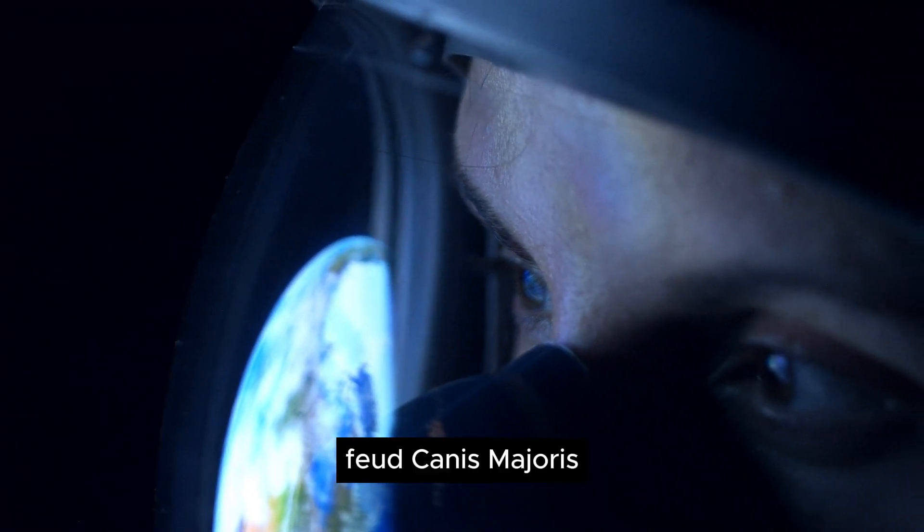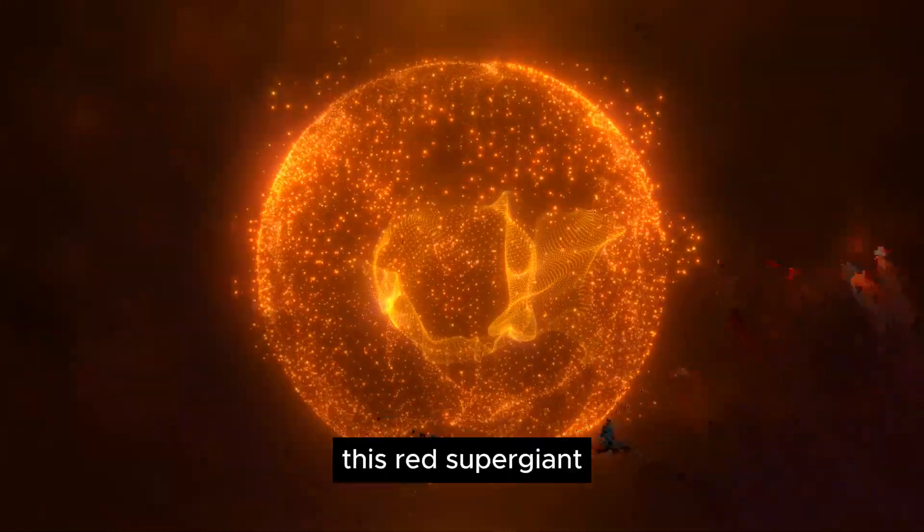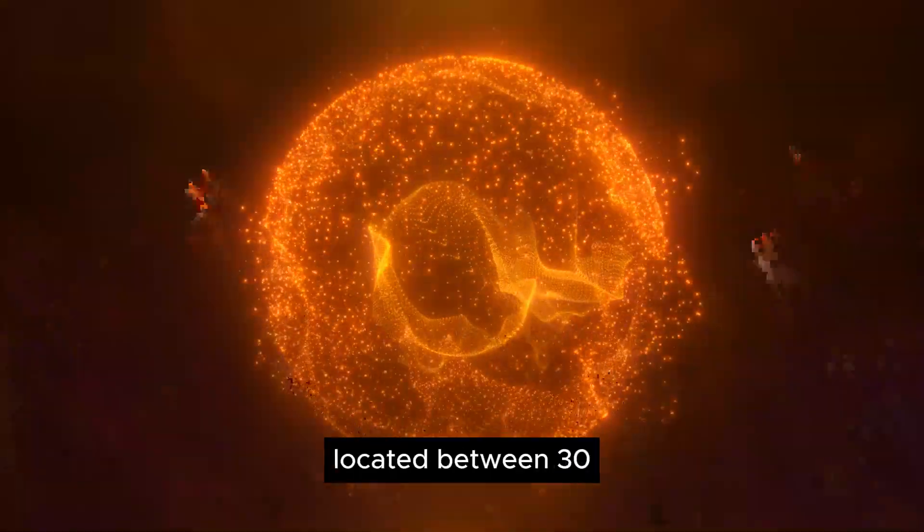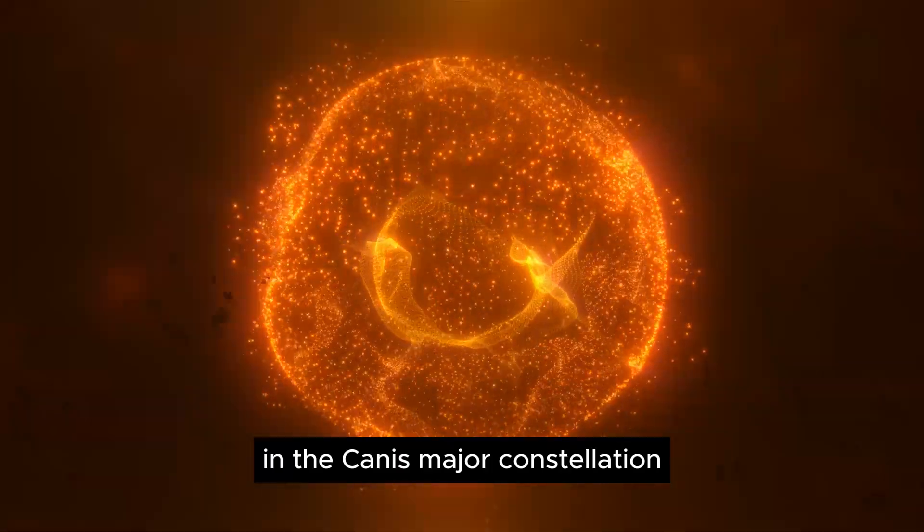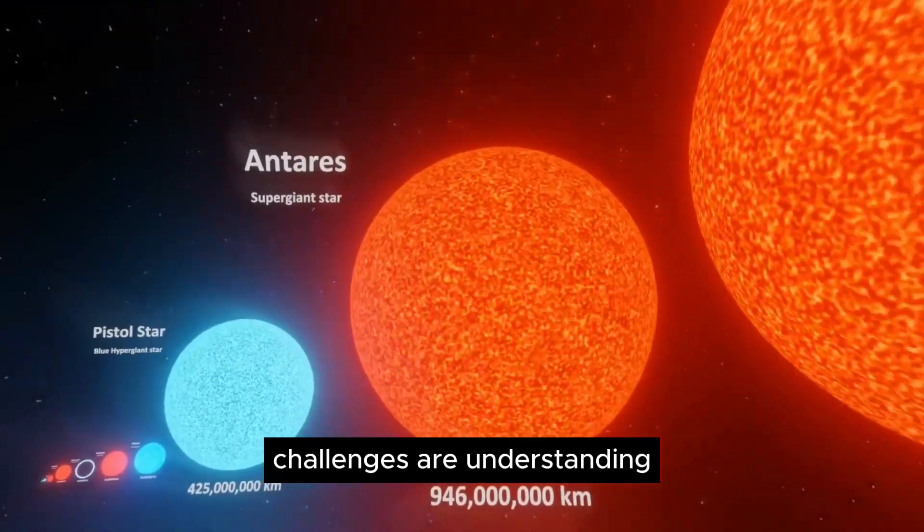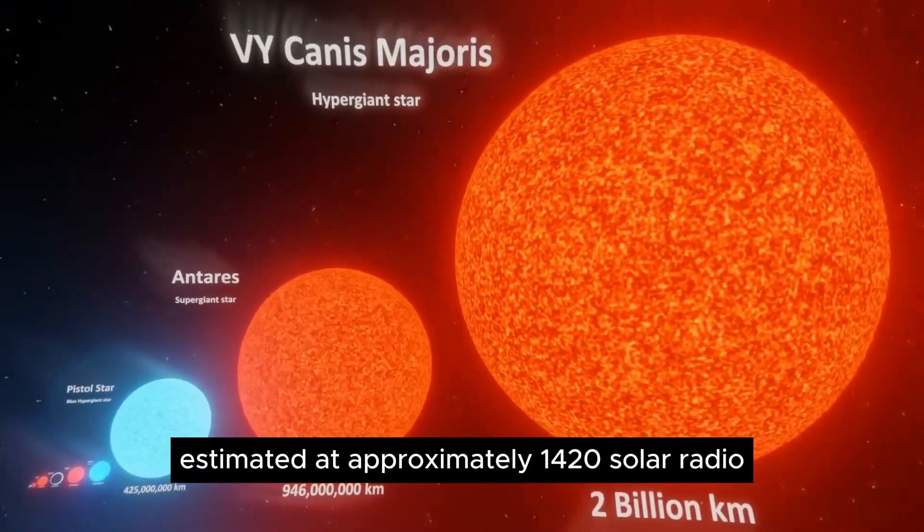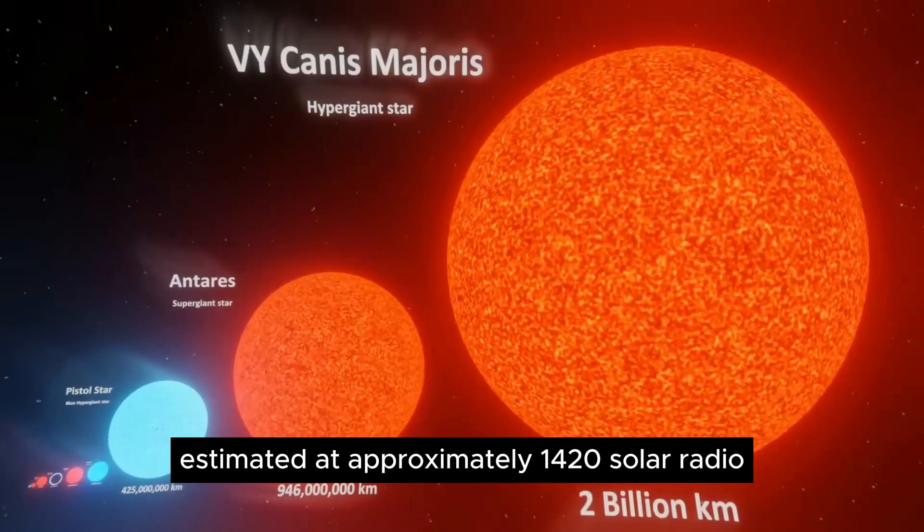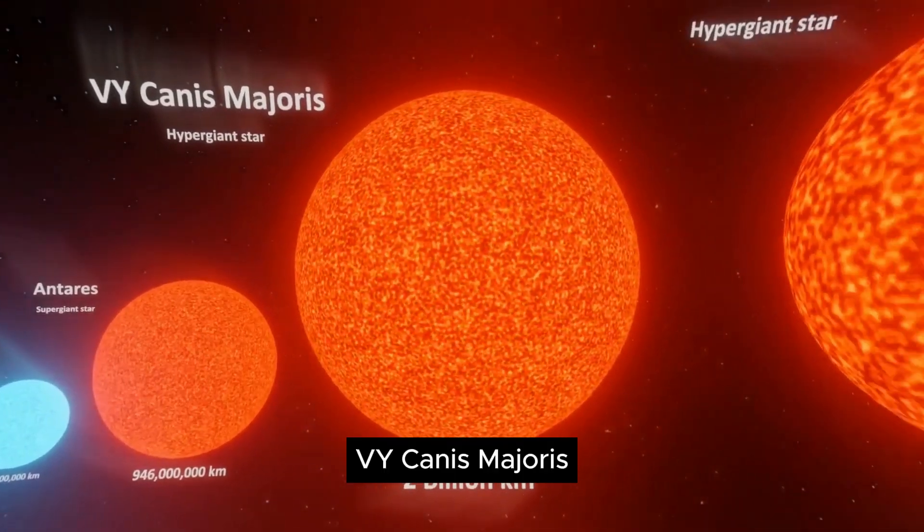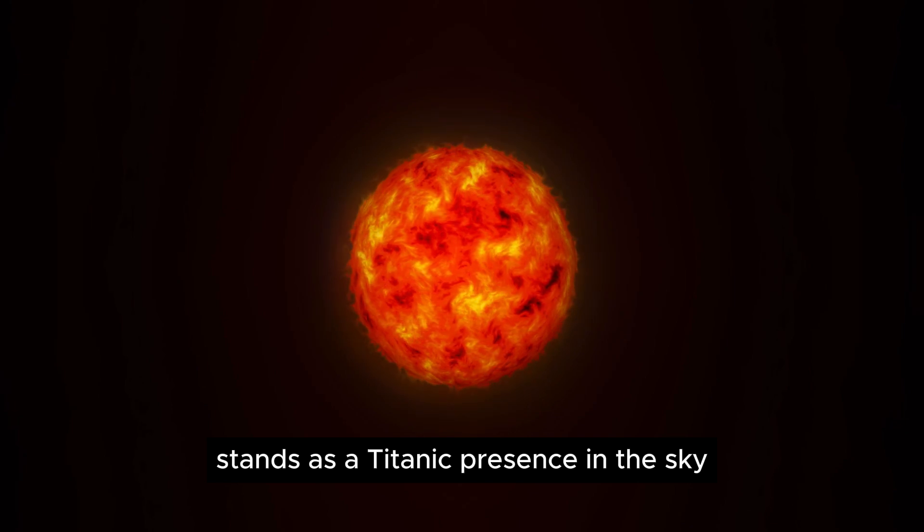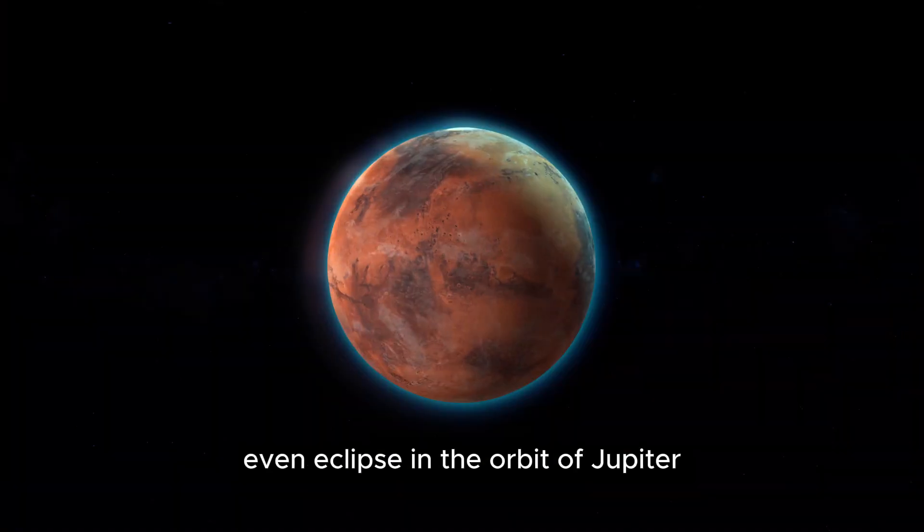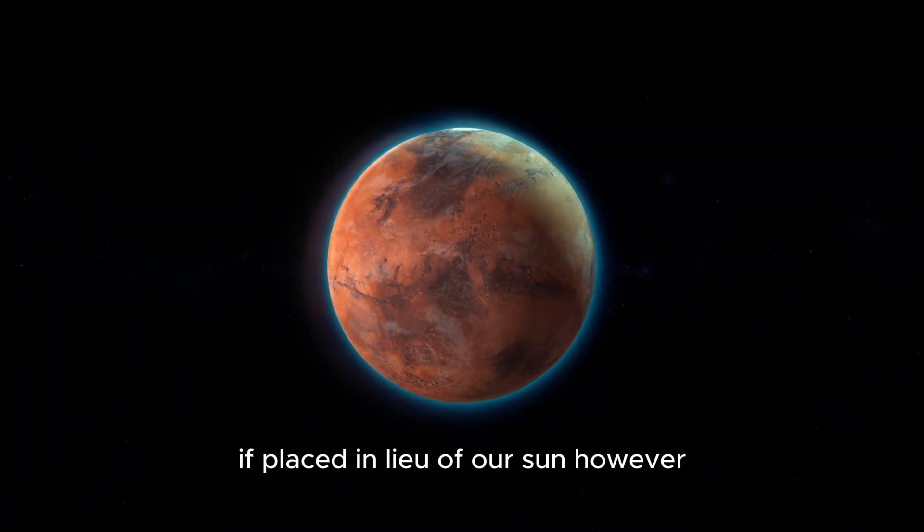VY Canis Majoris, a giant in debate. This red supergiant, located between 3,800 and 5,000 light-years away in the Canis Major constellation, challenges our understanding with its immensity. Estimated at approximately 1,420 solar radii, VY Canis Majoris stands as a titanic presence in the sky, even eclipsing the orbit of Jupiter if placed in lieu of our sun.